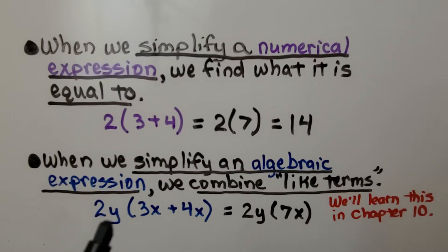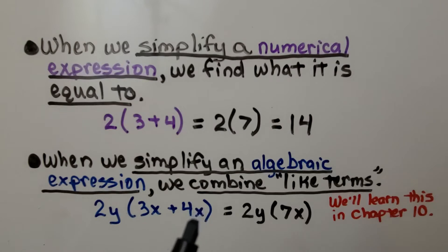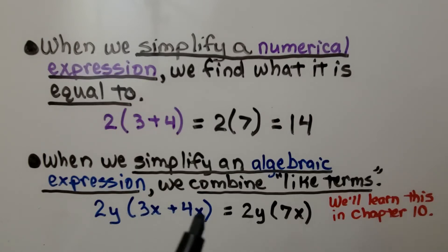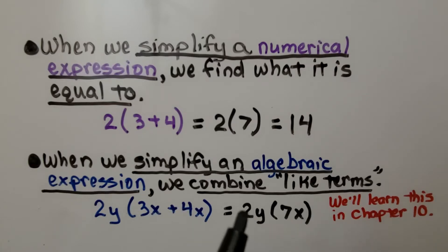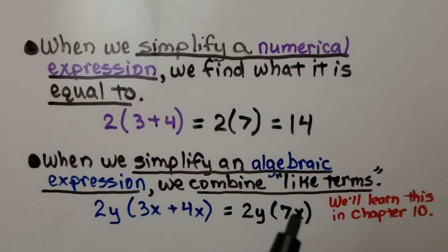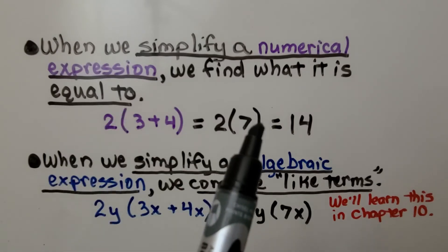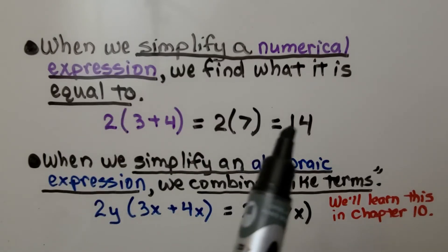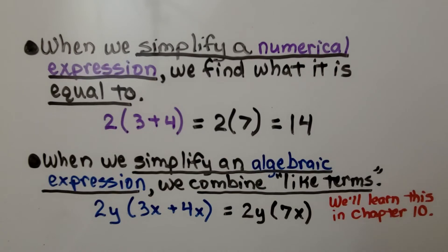Here we have 2y multiplied by (3x plus 4x) in parentheses. 3x plus 4x equals 7x, so we have 2y times 7x. We're going to learn more about this in chapter 10. When we simplify a numerical expression, we're evaluating it — we're finding what it's equal to.